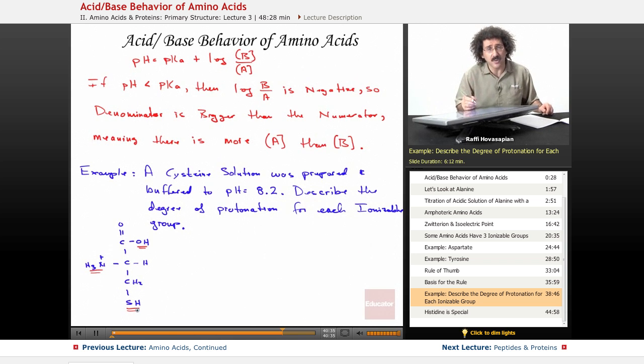We have three ionizable groups. At pH of 8.2, which one is protonated, which one is not? Well, let's see what we've got. We look up the pKs. The pK1 is equal to 1.96. The pKR is equal to 8.18. So notice in this case, the R group ionizes before this group does. The pK2 is equal to 10.28.